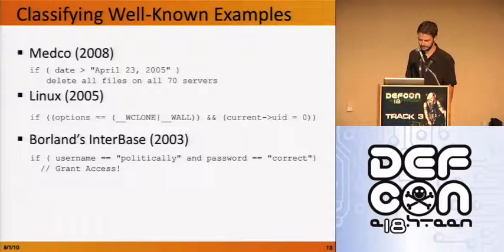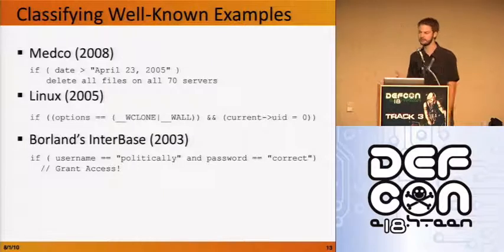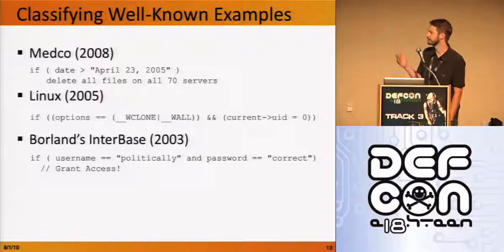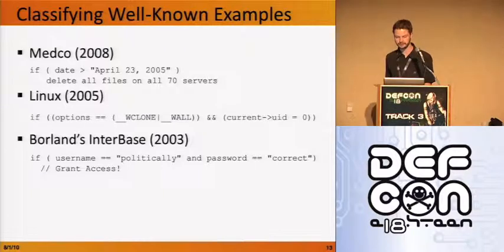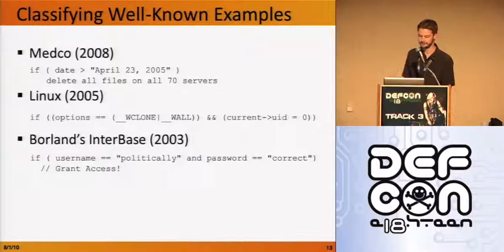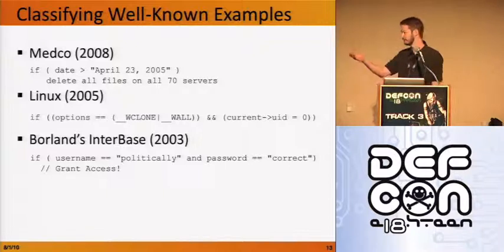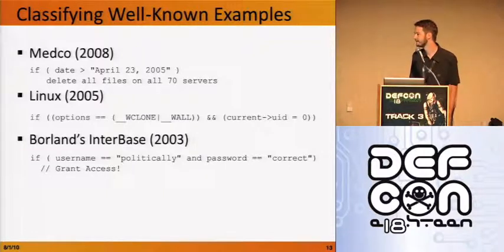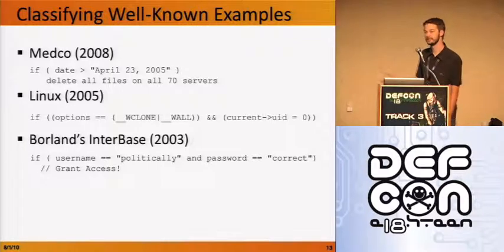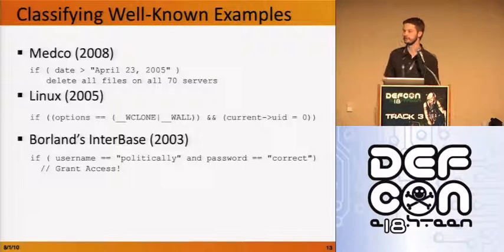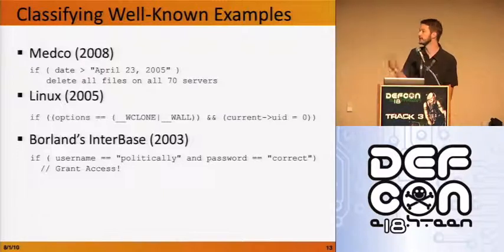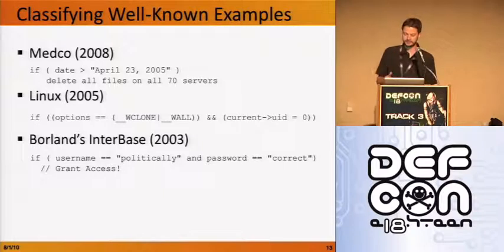The second example is from Linux. The functionality of the if statement should be: two flags for a particular command can only be executed when a person is root. You compare the options — clone and wall — and check if the user is root or zero. But something is wrong. It's not a comparison — it's setting the value of the user ID to zero, not comparing the user ID to zero. This is blended into the if statement itself, not a separate statement, so it's definitely trying to hide from a manual auditor. This also falls under authorization — only root should be able to execute this command.